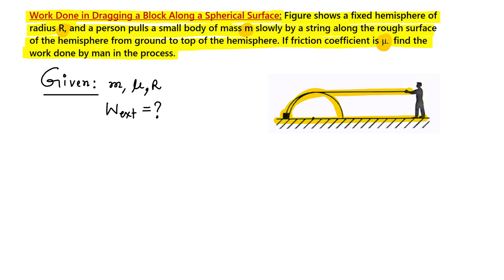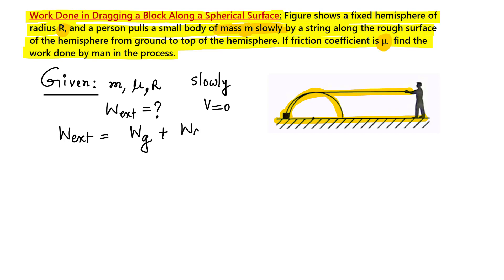Now let us look at the important points. The first keyword is 'slowly' — this mass is moved slowly, which means velocity is approximately zero. If we apply the work-energy theorem, change in kinetic energy equals total work done; since velocity is always zero, there is no change in kinetic energy. Therefore, the work done by the external agent equals the work done against all internal forces — that is, work done by gravity plus work done by friction.